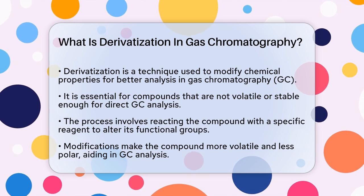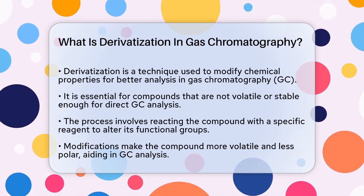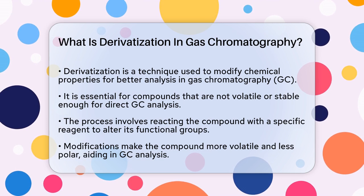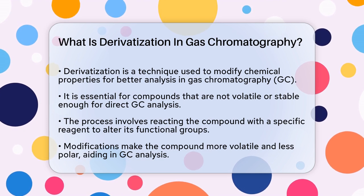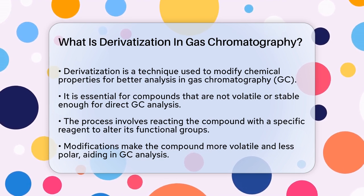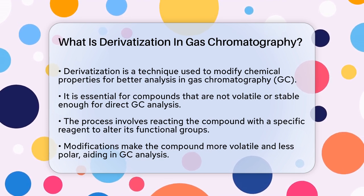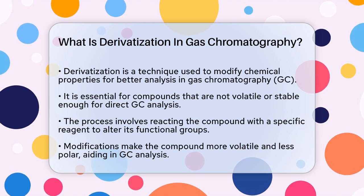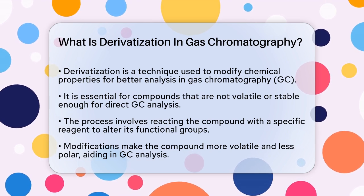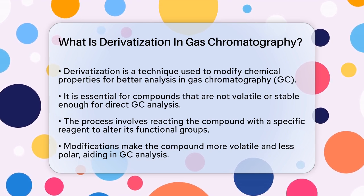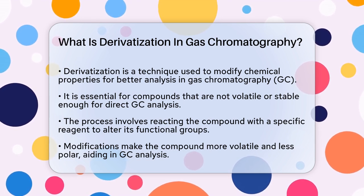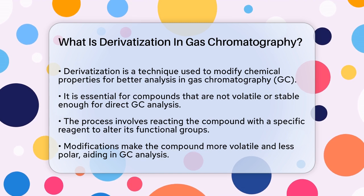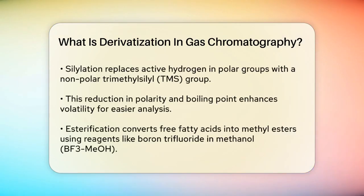Here's how it works. Derivatization involves reacting the compound of interest with a specific reagent. This reaction modifies the compound's functional groups, making it more volatile and less polar. For example, if you have a compound with polar groups like hydroxyl or carboxyl, these groups can form strong hydrogen bonds, making the compound difficult to volatilize.